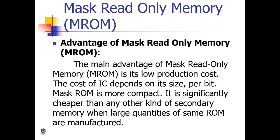The cost of the IC depends on its size per bit. Mask ROM is more compact and significantly cheaper than any other kind of secondary memory when large quantities of the same ROM are manufactured.